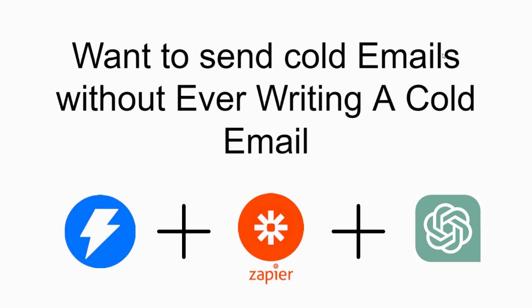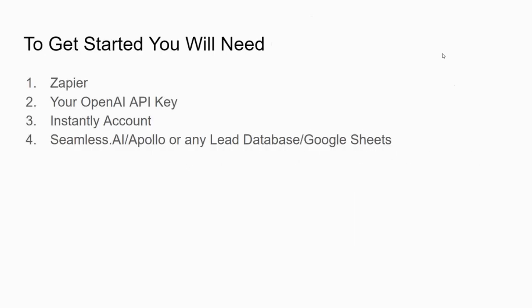In this video I'm going to show you how to use OpenAI to write your emails automatically. Here's how it works: you create your contact list, and the moment you upload that list into your cold email tool, it gets uploaded with a personalized cold email already written to that specific prospect or lead.